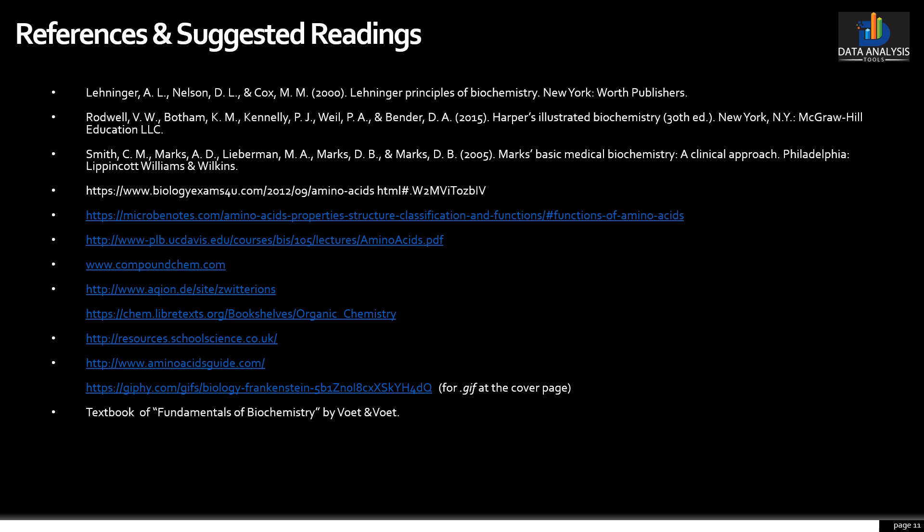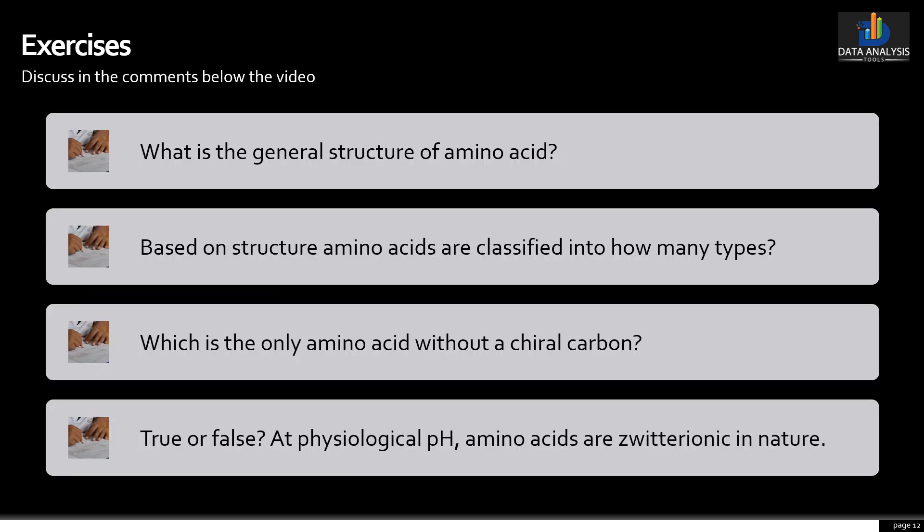Here are some of the sources I consulted during the preparation of this material. You may go through these for further reading. I would also suggest the fundamentals of biochemistry textbook by Voigt and Voigt, which is quite rich and helpful for studying not only amino acids but biochemistry as a whole for undergraduate and master's students. At the end, I leave you with a very short exercise.